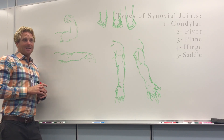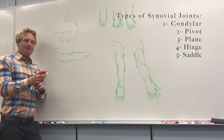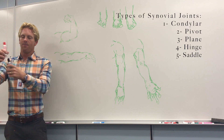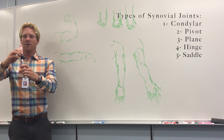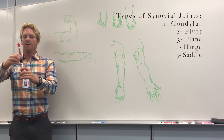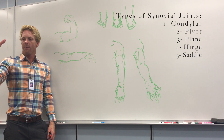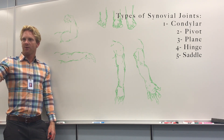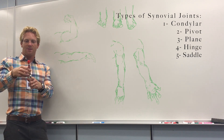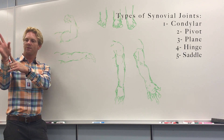Next, we have a saddle joint. A saddle joint is kind of unique — a great example is where the first metacarpal of your thumb connects to your carpal bones at the base of your thumb. This joint allows two axes of motion, so it can go like this and at a 90-degree angle like this. It's almost like a condylar joint but without all the flexibility. If you try to roll your thumb in a circular motion, you'll notice it almost clicks back and forth between positions — that's because this is a saddle joint, and it's not really a smooth circular motion.